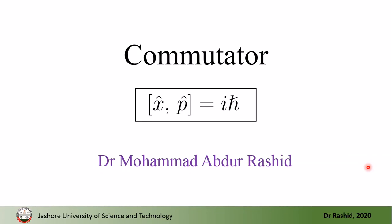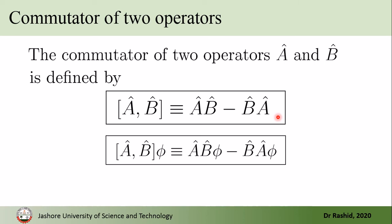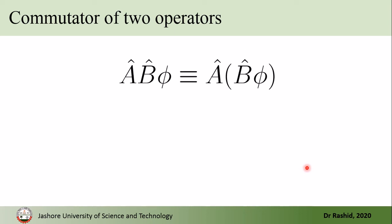Assalamu alaikum. Today we shall talk about the commutator of position and momentum operators. Suppose we have two linear operators A-hat and B-hat, where the hat is used to distinguish them as operators. The commutator of these two operators is defined such that when the commutator acts on a function phi, it equals the difference of these two results. This is important because the order in which the operators act on a function matters.